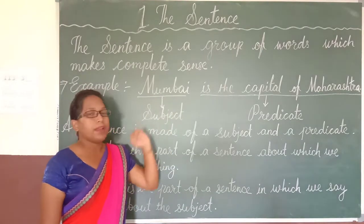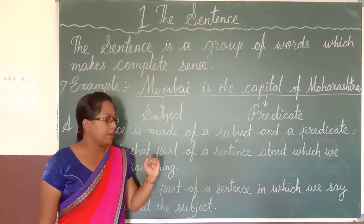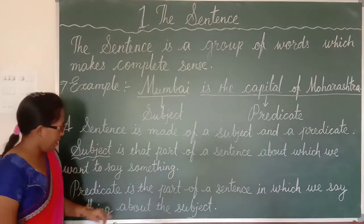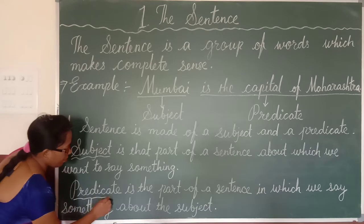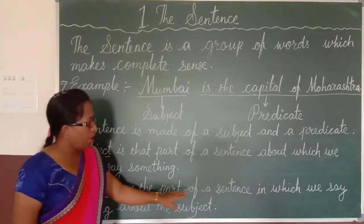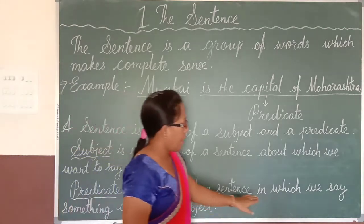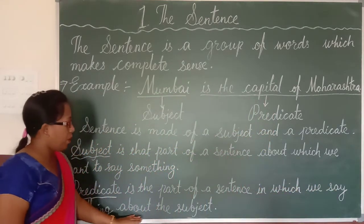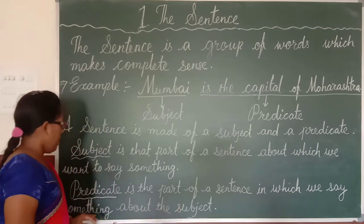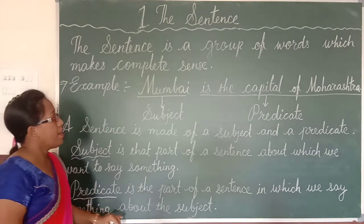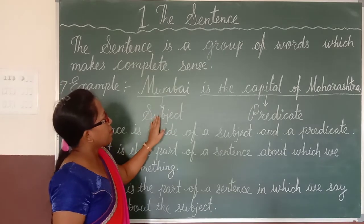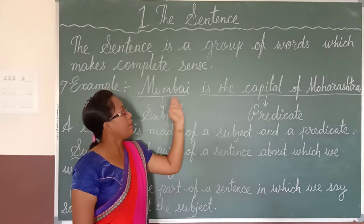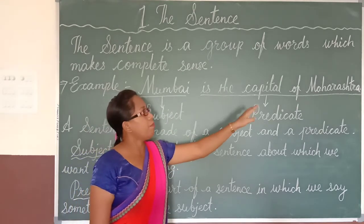So, what is the predicate? The predicate is the part of a sentence in which we say something about the subject. For example, in the sentence 'Mumbai is the capital of Maharashtra,' you can see that Mumbai is the subject.